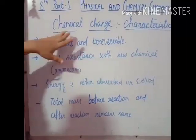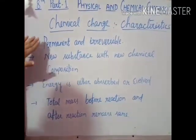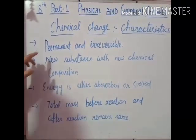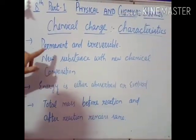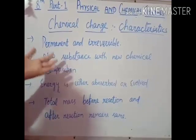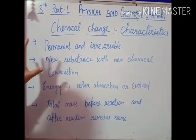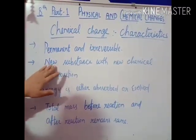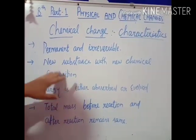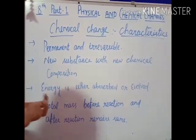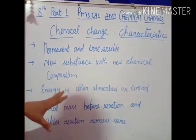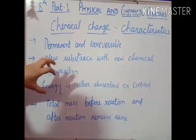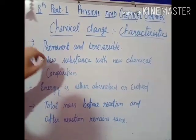Now let's look at the characteristics of chemical change based on what we observed in burning of paper. First, the change is permanent and irreversible — permanent means the paper totally lost its property, and irreversible means you cannot get it back. Second, a new substance with a new chemical composition is formed — in this case, you got white-colored ash, whose composition is totally different from that of the paper. That is why ash is the new substance.